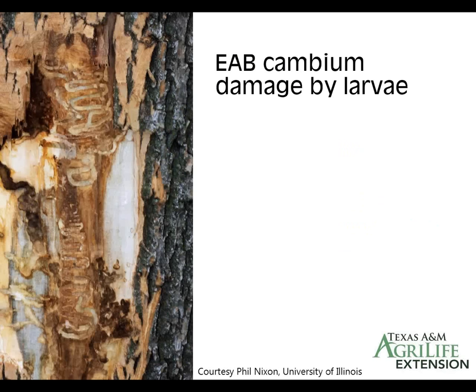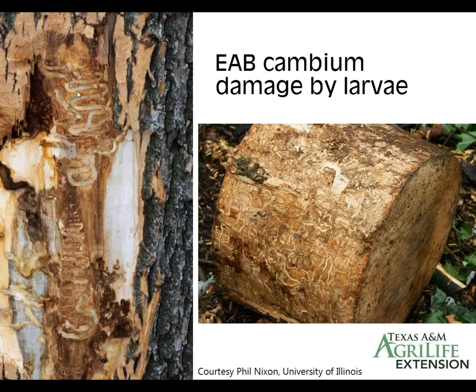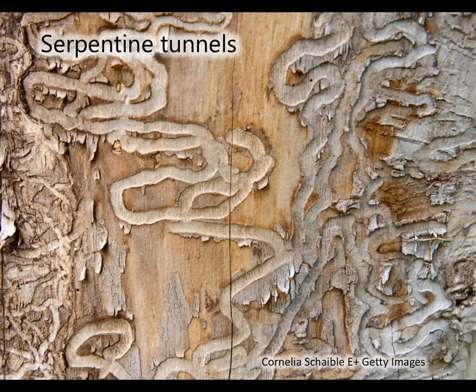The damage under the bark caused by larvae is called serpentine damage. The trails go back and forth like a meandering river — very distinctive and characteristic of this beetle. This back-and-forth, highly meandering tunneling pattern is characteristic of EAB.